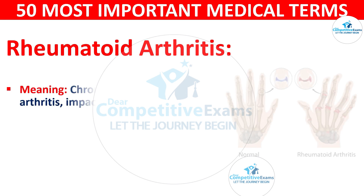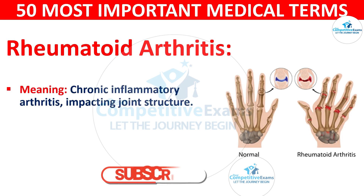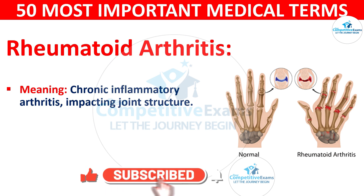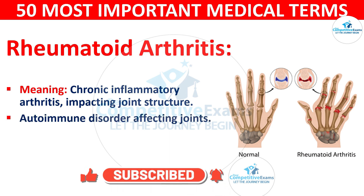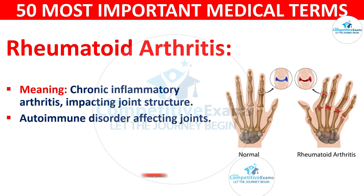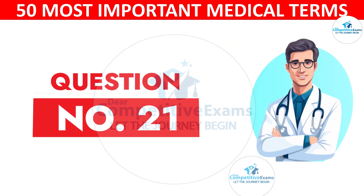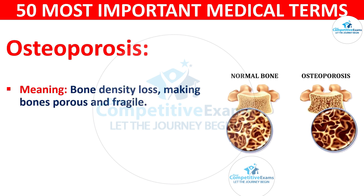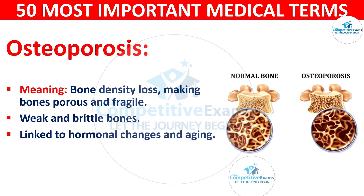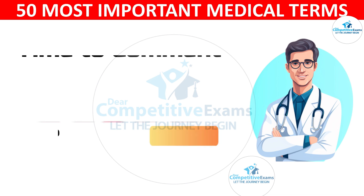Rheumatoid arthritis: meaning chronic inflammatory arthritis impacting joint structure. It is an autoimmune disorder affecting the joints, causing inflammation and joint damage. Osteoporosis: meaning bone density loss making bones porous and fragile. It results in weak and brittle bones, linked to hormonal changes and aging.